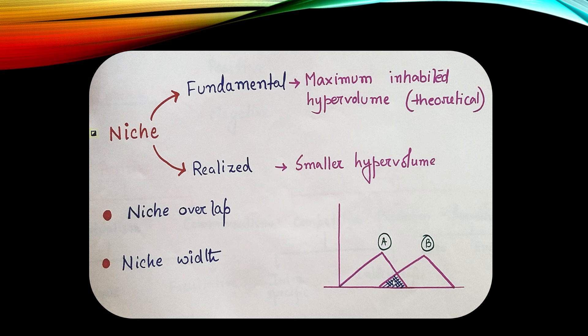And niche overlap is this shaded region. Species A is occupying this niche. Species B is occupying this niche. Now, there is an overlap. A small area in these two triangles are seen to be common. This shaded common region is the overlapped region or niche overlap.